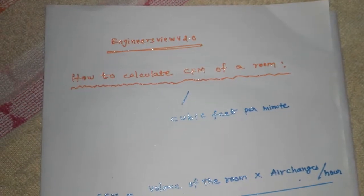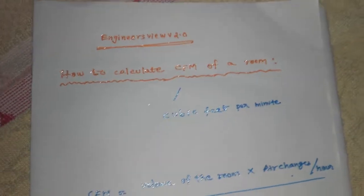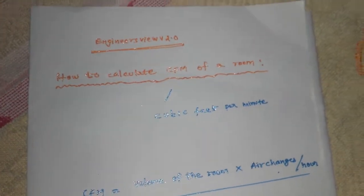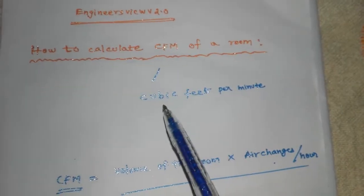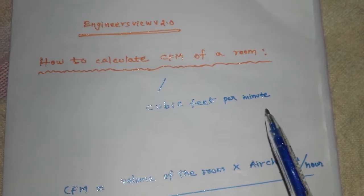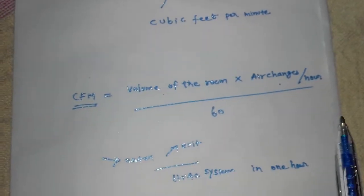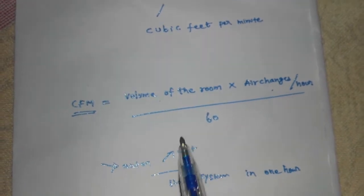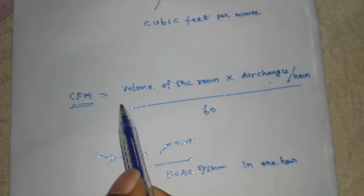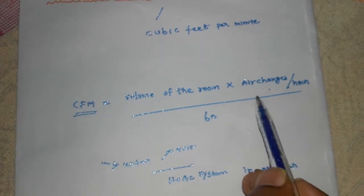Today we are going to discuss how to calculate the CFM of a room. CFM is cubic feet per minute. The formula is: CFM equals volume of the room multiplied by air changes per hour, divided by 60. This is the standard formula.